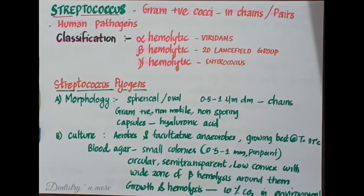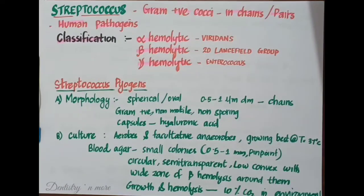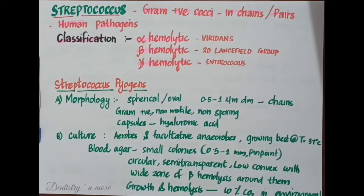Beta hemolytic Streptococci were classified by Lancefield on the basis of serological tests, categorized into 20 groups from A to V based on a precipitation reaction performed with appropriate sera. These are named Lancefield groups, and the majority of Streptococci that produce human infection belong to group A Streptococci.